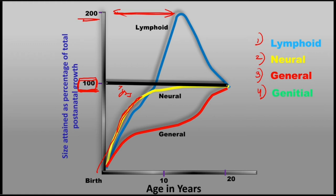There are four phases in the general growth curve. The first phase is rapid growth seen during infancy. Then during middle childhood, there is a steady growth phase. Next comes the adolescent phase, where the child is again growing very rapidly. Finally, there is a slow increase and eventual cessation of growth after adolescence.